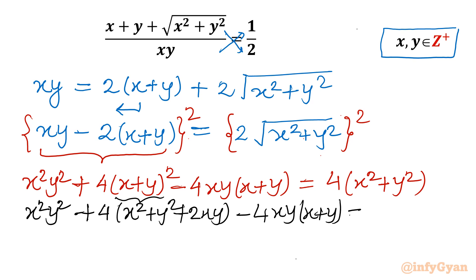So LHS we can write x square y square plus 4x square plus y square plus 2xy minus 4xy x plus y. And right hand side if I will expand it will become 4x square plus 4y square. Now you can see I can cancel without multiplying. 4 is waiting outside. So 4x square 4y square. So what is left? x square y square plus 8xy minus 4xy in bracket x plus y equal to 0.